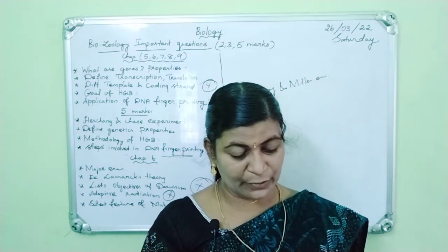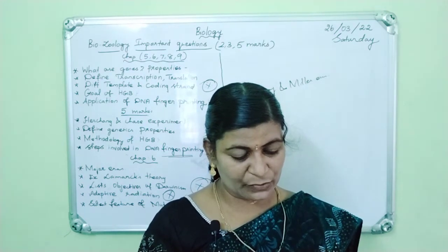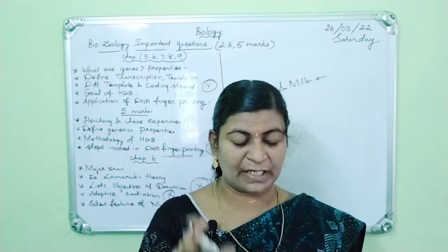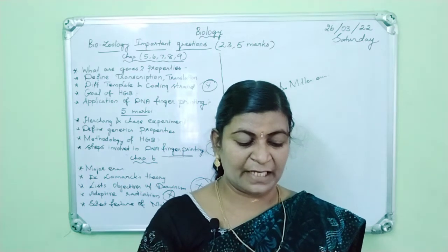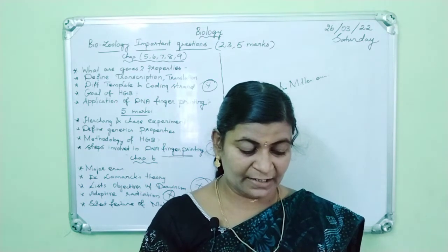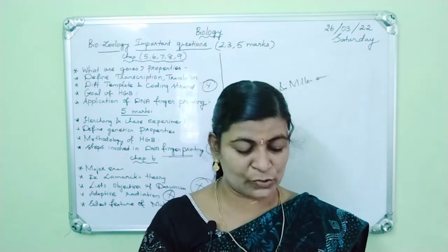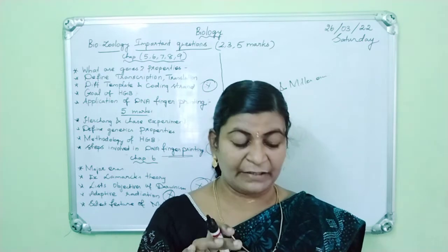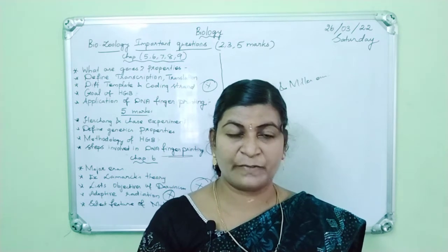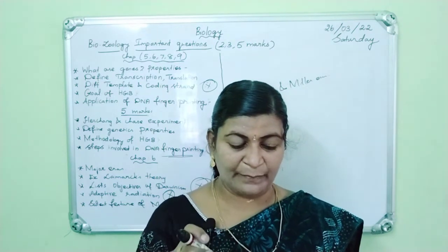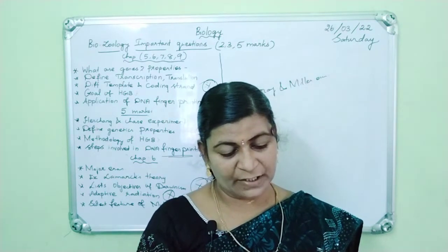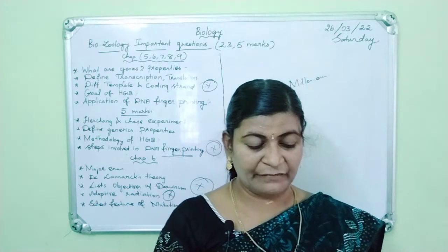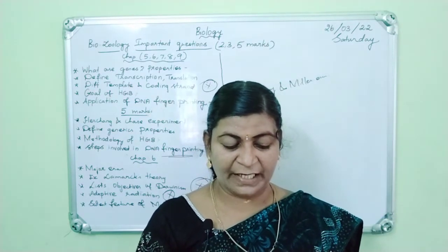In Chapter 7, the two and three mark questions: what is the causative agent and diagnosis test for typhoid? What are the types of viral diseases? What are the agents of protozoan diseases? What are the causative agents of malaria? What is the difference between antigen and antibody — it is the most important question.